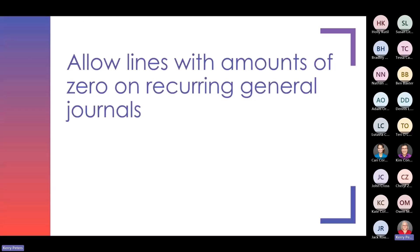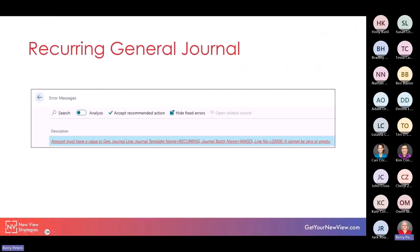I have to say I'm really excited about this one. We'll now be able to allow lines with amounts of zero on recurring general journals to post. This is just a screenshot of an error message that you might have seen previously. On the recurring general journal, if you had a line that had a zero dollar amount, you were not able to post it. You'd get an error message saying that the amount must have a value in whatever that line is — it cannot be zero or empty.